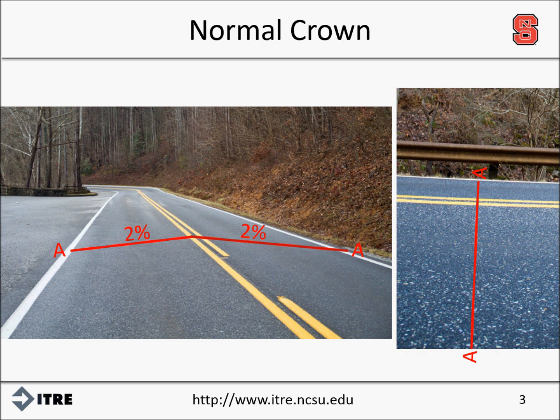A straight, tangent roadway segment is typically designed with a normal crown for the sole purpose of providing sufficient drainage of water away from the roadway. The term normal crown is used to describe the type of cross slope and the percentage of the slope. Normal crown has a rooftop shape, which peaks in the center of the roadway and falls away from the center line at a typical rate of 2%. This means that for a roadway with 12-foot lanes, the edge of the roadway will be 0.24 feet below the elevation of the center line. Most drivers do not notice this amount of cross slope, and this cross slope does not typically affect the ride quality of the vehicle.